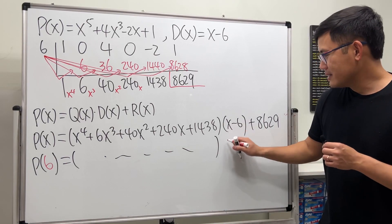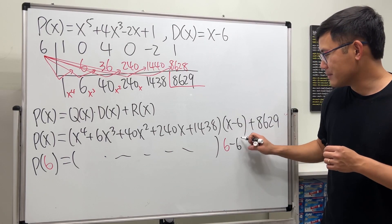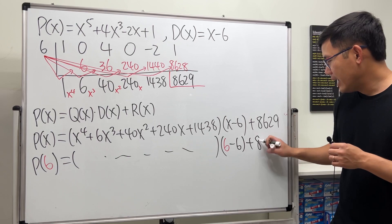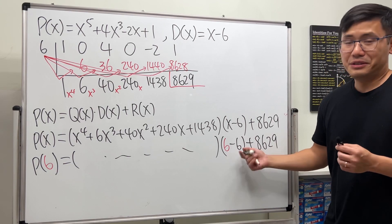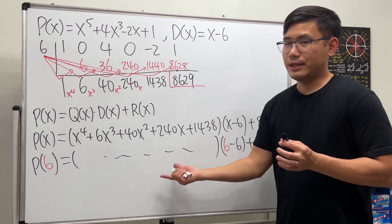Well, I will plug in 6 into the x right here, and we have 6 minus 6, and then plus 8629. But guess what? This is 0 times—I don't know, I don't care. All this is just going to be 0.